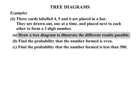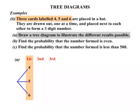Well let's start by our tree diagram. So they are drawn out one at a time. So a first draw, a second draw and then a third draw. Now the three cards are labelled four, five and six. So the first possibility, we could get a four, or we could get a five, or we could get a six.